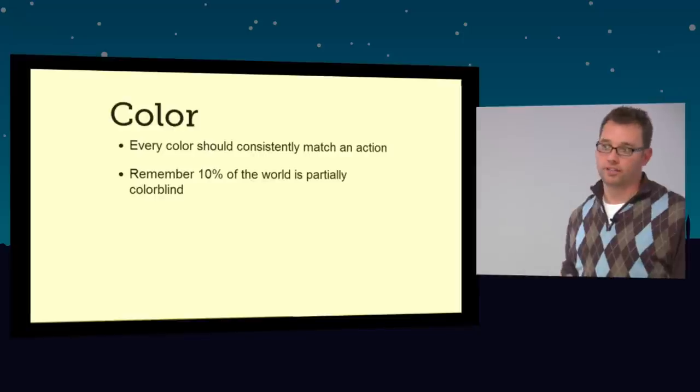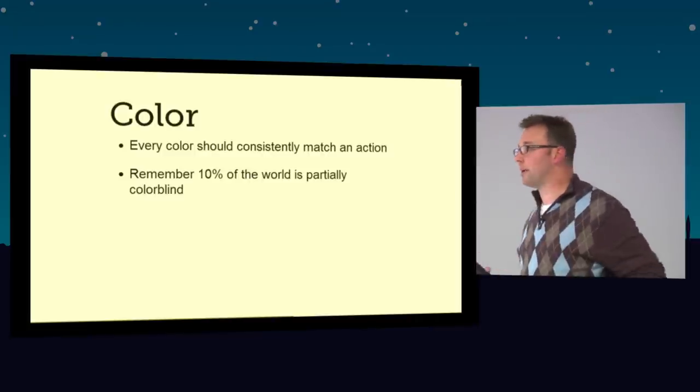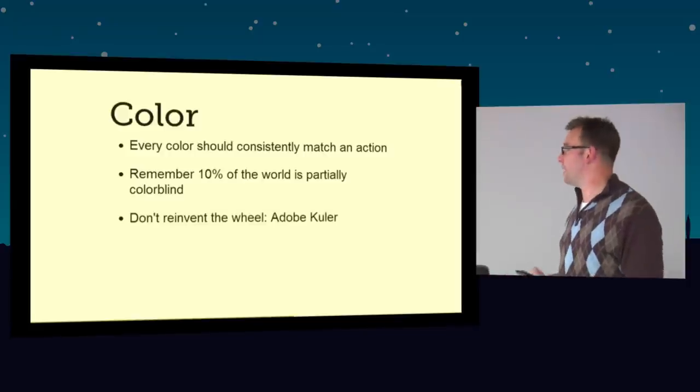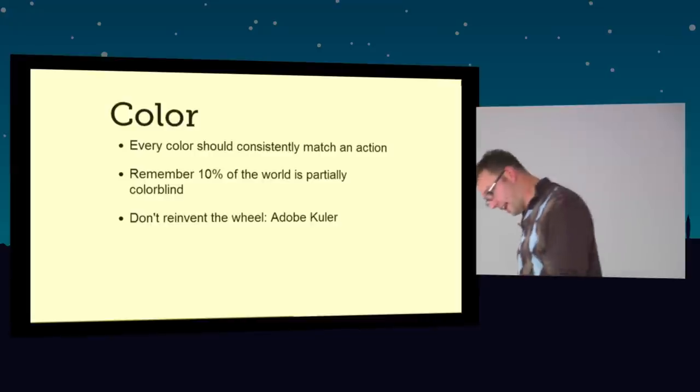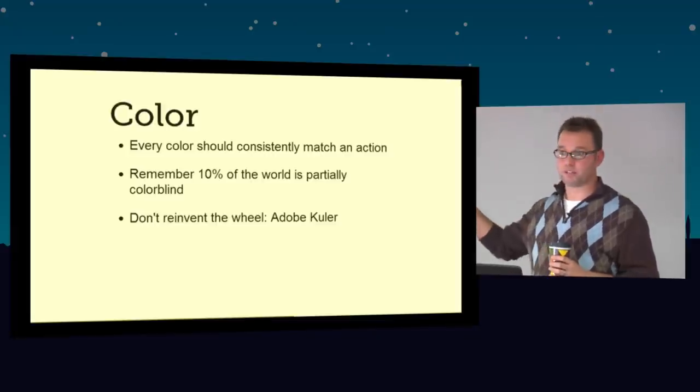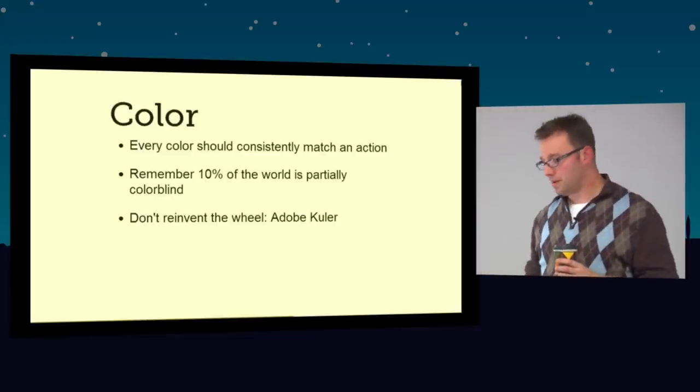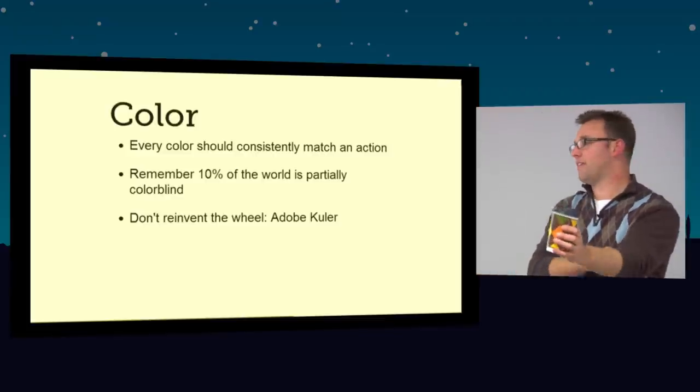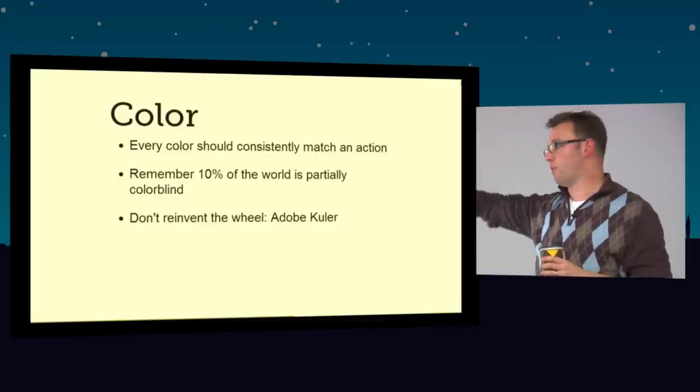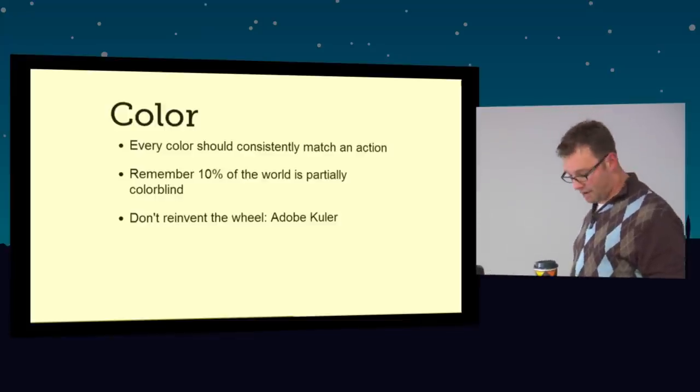And I want you to remember this, too. 10% of the world is at least partially colorblind. A lot of times, it's blue-green, or blue-purple, or red-orange. So depending on how you're laying out your colors, you'll end up confusing 10% of the population if you don't also give them some direction some way else. And this is the other part that I think is important. Don't reinvent the wheel. Have you guys ever heard of the Adobe cooler? It is the single greatest resource for color on the face of the planet.